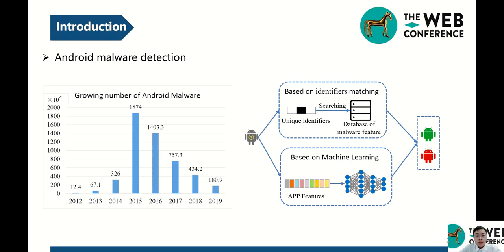There are two kinds of methods for Android malware detection. The first is traditional method, which needs to extract a unique identifier from an app, and then search whether it matches any record in a database. However, this method suffers from the disadvantages of low efficiency and high false drop rate. The second method is based on machine learning. It needs to extract features from the apps and use these features to train a classifier to detect malware.